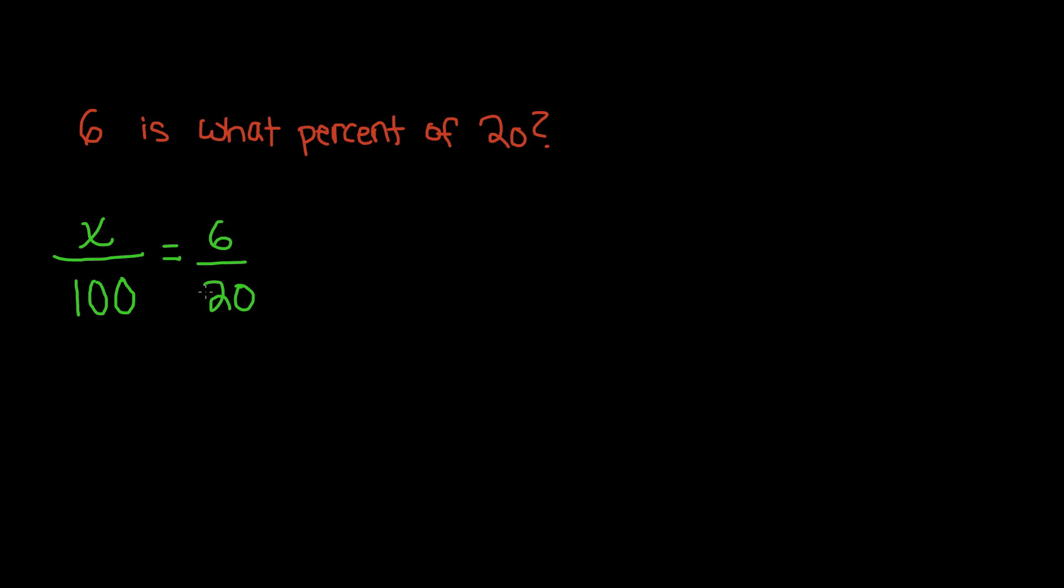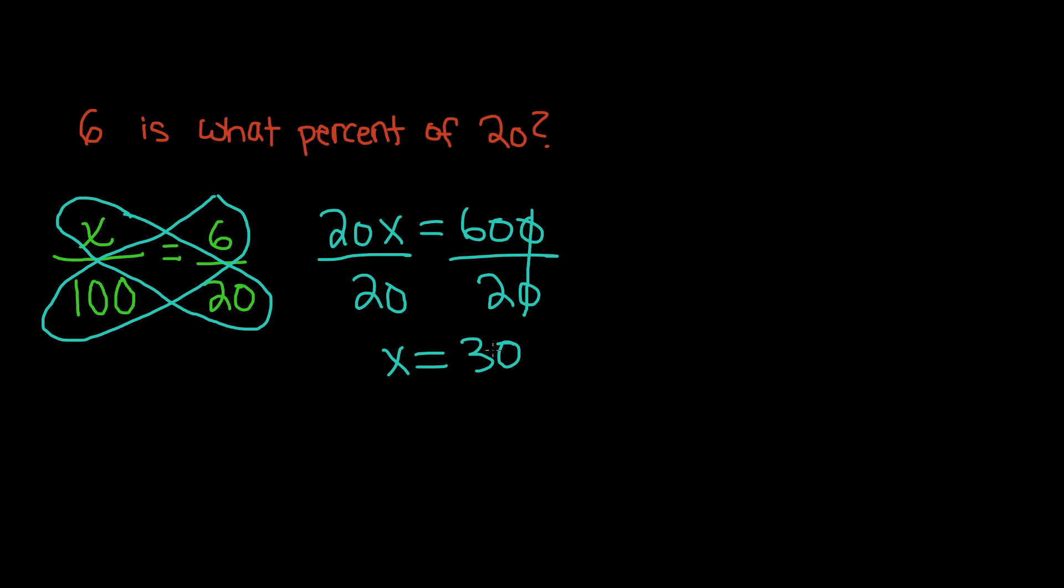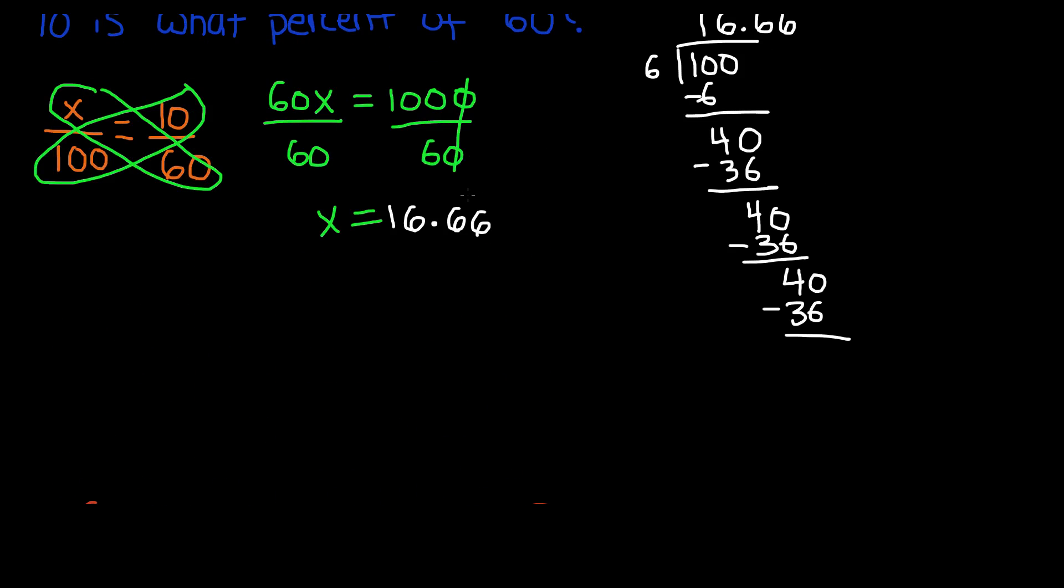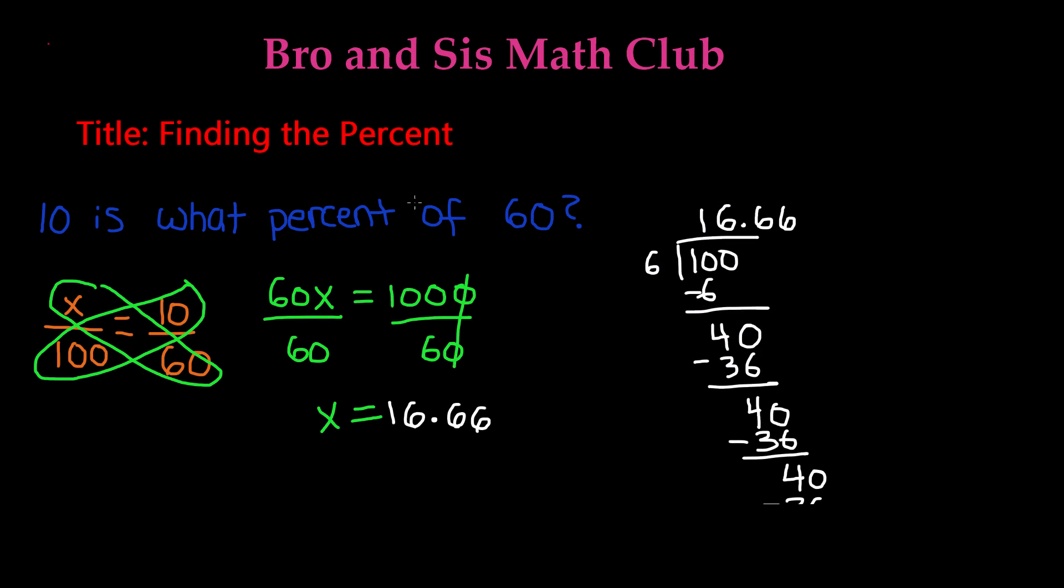Here, if you notice the pattern, once you've got a hang of setting up one problem, the rest of them are really easy to set up and solve. So when you do this, I'm going to do cross multiplication. 20 times x and 6 times 100, you get 20x is equal to 600, divided by 20 on both sides. x is equal to, and then we cross out the zeros, 60 divided by 2, which is 30. That means 6 is 30% of the number 20. And that is how you find the percent in a percent problem.